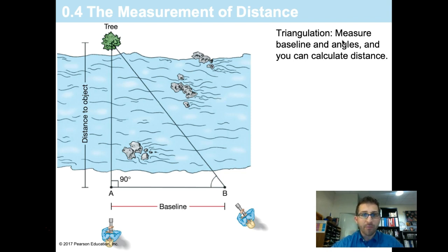So for this example, we have a surveyor, and the surveyor wants to know what the distance is to a tree across a river. Rather than trying to forge the river, the surveyor can use the process of triangulation. In order to do this, they have to create a right triangle.